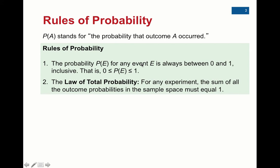The second rule is the law of total probability: for any experiment, the sum of all the outcomes has to add up to one. When we're talking about rolling a die, you have six different outcomes — they all have a probability of one-sixth — and if you add that all up, you're going to get one. You can't roll seven on a die because that's not a possible outcome. There are only six possible outcomes, and the probability of all those outcomes adds to one.